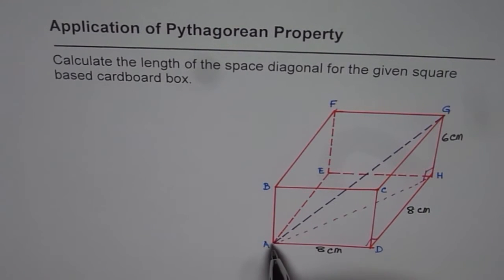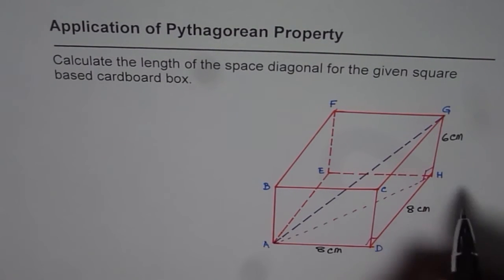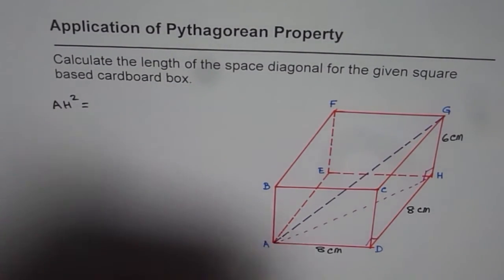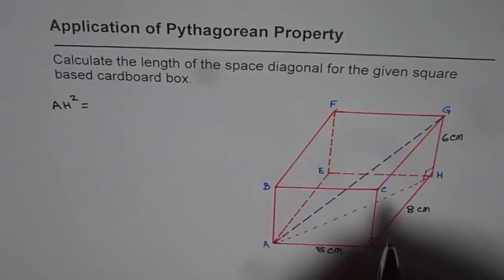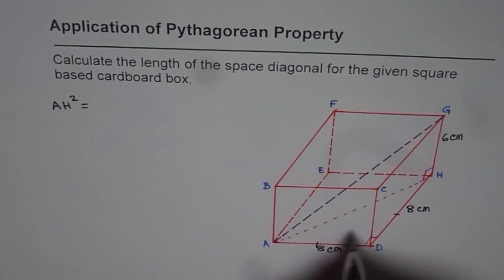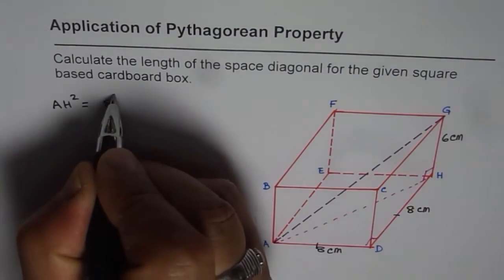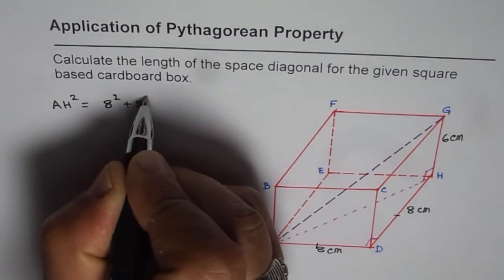So let us find A to H. So we know AH square is equal to 8 square plus 8 square. That is square based. All sides of the base are same.